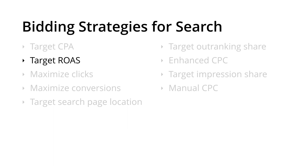Then we have Target ROAS, for return on advertising spend. This also requires conversion tracking. It allows us to put in a percentage that we want to see on top of the amount we're spending inside Google Ads. For example, if we put in 500%, that would mean we want to see $5 for every dollar spent within our campaigns.